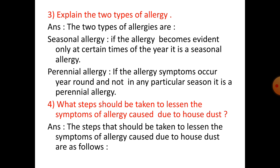Allergens can enter the body through bites and stings and go directly into the bloodstream and exert their effects. Number 3: Explain the two types of allergy. The two types of allergies are seasonal allergy — if the allergy becomes evident only at certain times of the year, it is a seasonal allergy — and perennial allergy — if the allergy symptoms occur year round and not in any particular season, it is a perennial allergy.